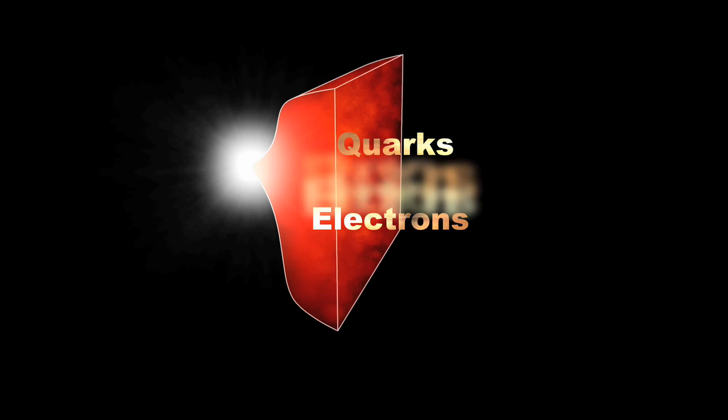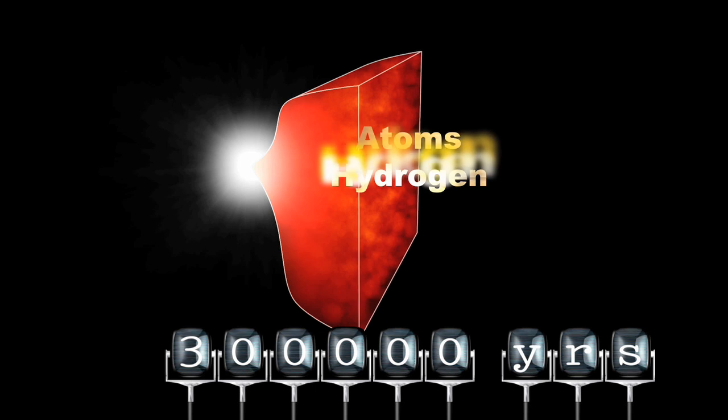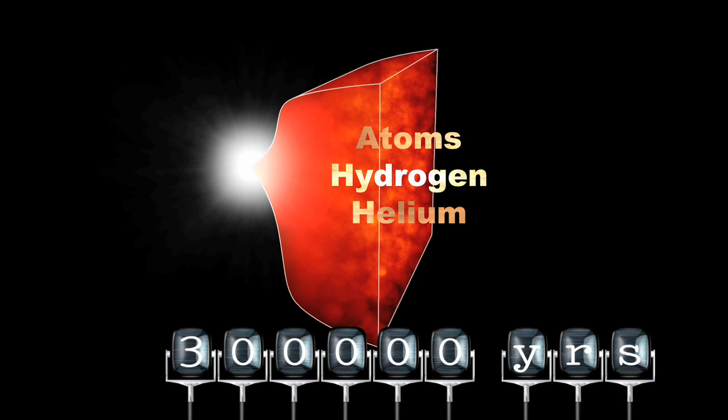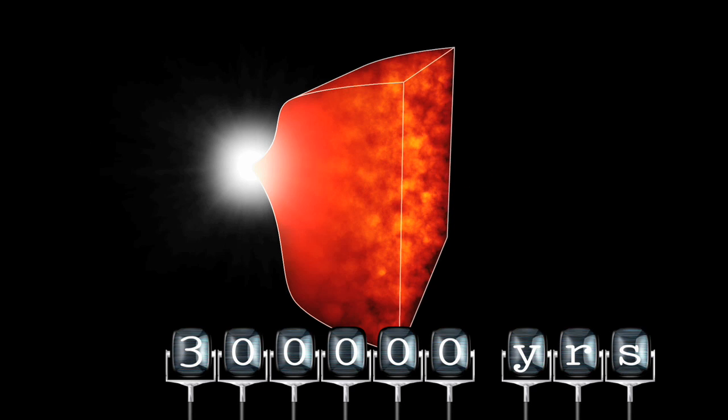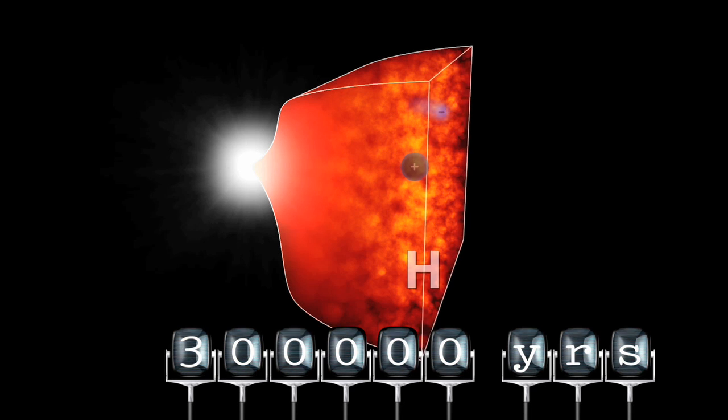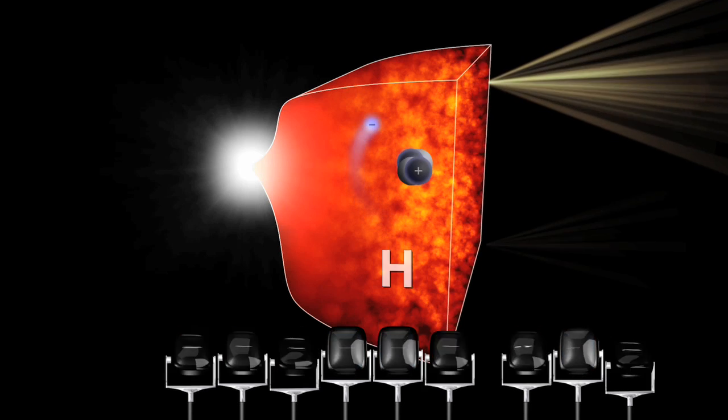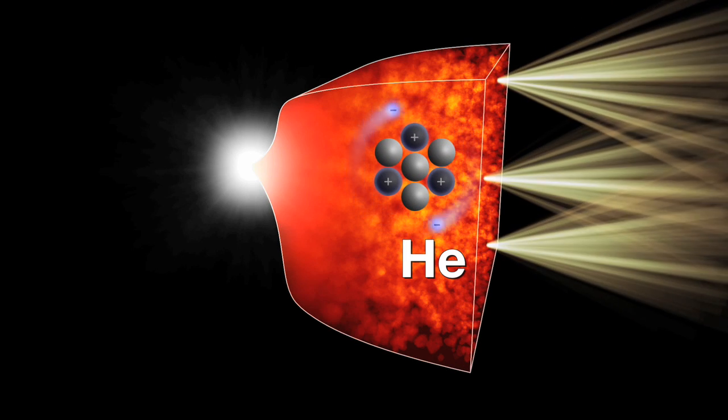After about 300,000 years, the first atoms formed, hydrogen and helium. Initially, these atoms were ionized. Photons were continually scattered by the free electrons and trapped inside the plasma. Further expansion cooled the plasma, enabling atoms to capture and bind electrons. At this time, the universe became transparent. The liberated photons were able to propagate freely in all directions.